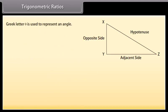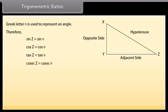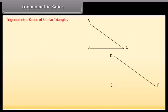The Greek letter theta is used to represent an angle. Therefore, sin Z may be written as sin θ. Similarly, cos Z equals cos θ, tan Z equals tan θ, cosec Z equals cosec θ, sec Z equals sec θ, and cot Z equals cot θ.